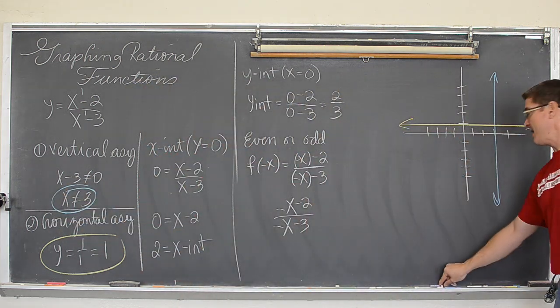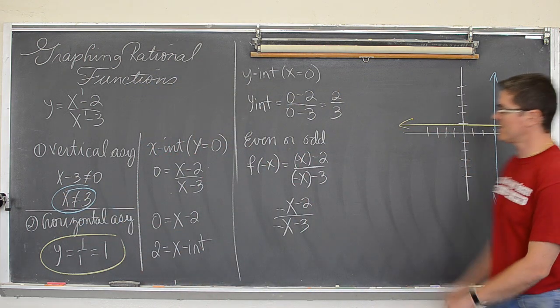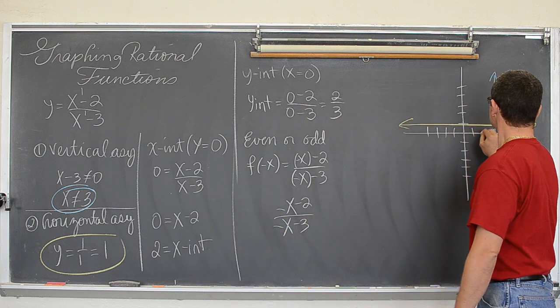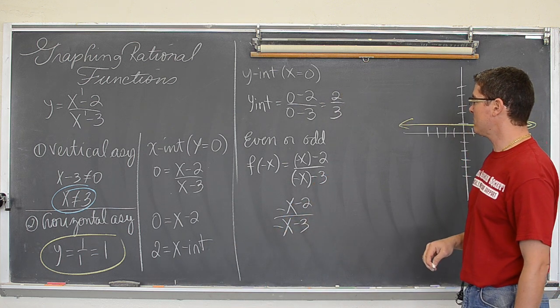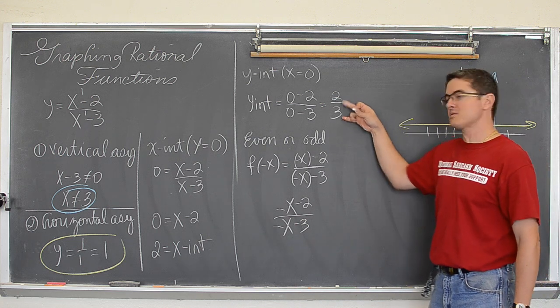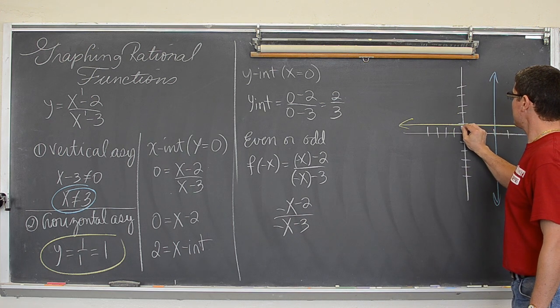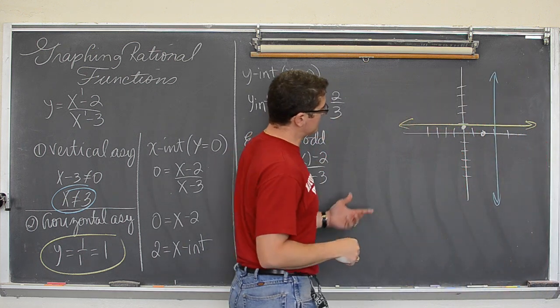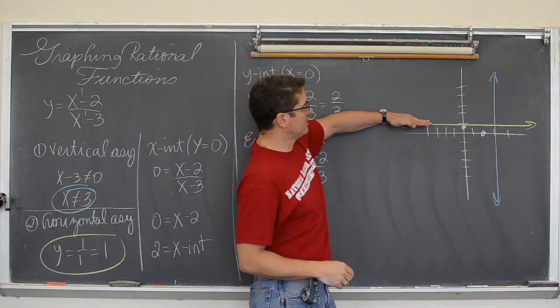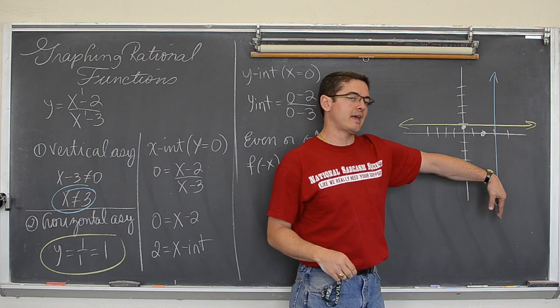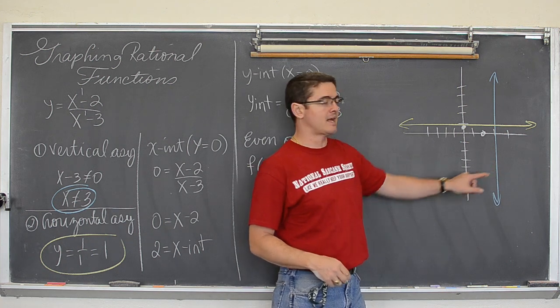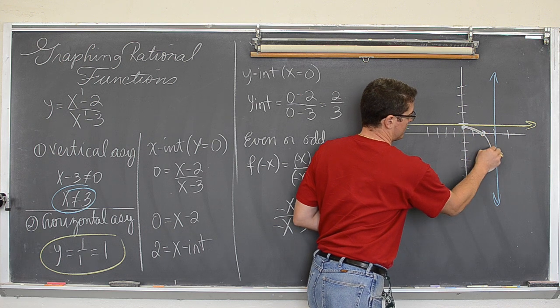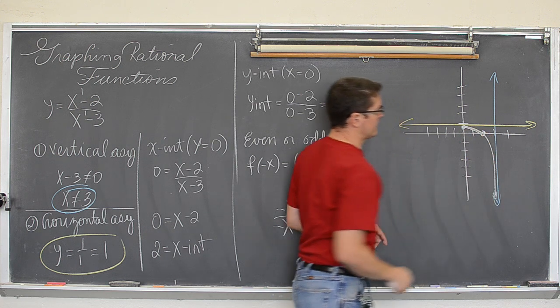And what do we have at this point? We have our x-intercept is 2. We have our y-intercept is 2 thirds. And that is about it. So I might need to find a few more points. Now you have the possibility of crossing a horizontal asymptote occasionally, but you will never cross a vertical asymptote. So this graph is coming down through this point and it is going to curve down towards negative infinity.